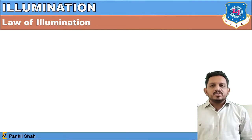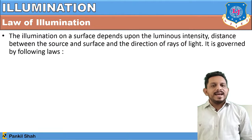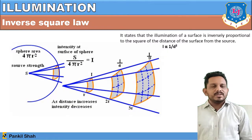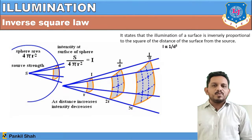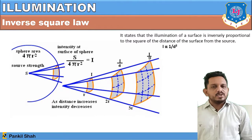Now let's see the laws of illumination. Illumination on a surface depends upon the luminous intensity distribution between the source and surface, and the direction of the ray of light. There are two laws: the inverse square law and Lambert's cosine law. The inverse square law states that illumination of a surface is inversely proportional to the square of the distance from the source — I ∝ 1/d².